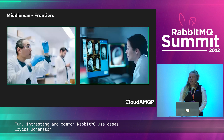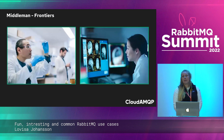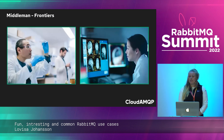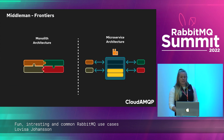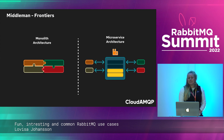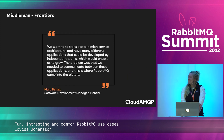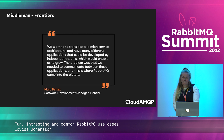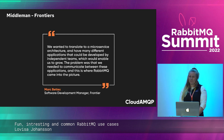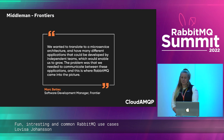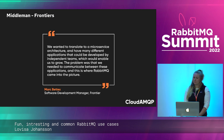Frontier is also one of our clients, known for their open science platform. They aim to make scientific discoveries open for the benefit of humanity. RabbitMQ plays an important role behind the scenes there. When Frontier started, it was based on a monolithic architecture. They wanted to transition to a microservice architecture with many different applications developed by independent teams, which would enable growth. The problem was that they needed to communicate between these applications — and this is where RabbitMQ came into the picture.